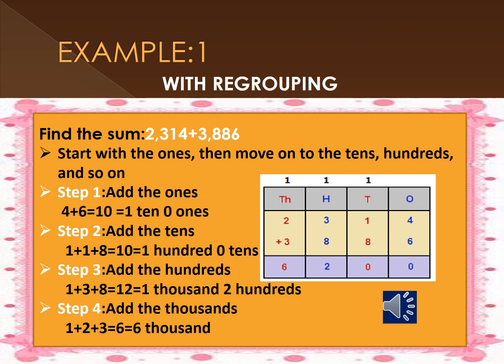Your next problem will be adding with regrouping. Children, what do you mean by regrouping? When you add two numbers and get a carry over, regrouping takes place. Here we are going to find the sum of 2,314 and 3,886.